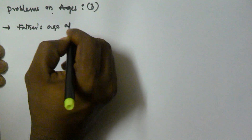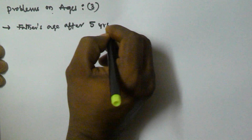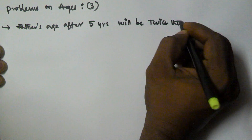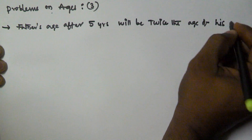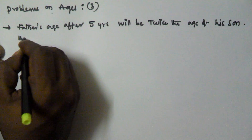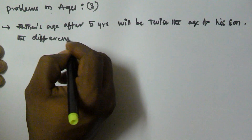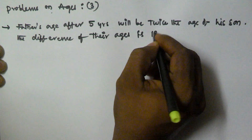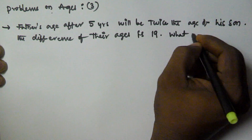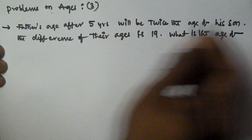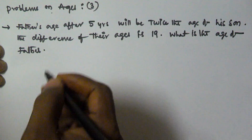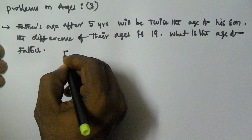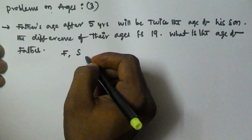Father's age after 5 years will be twice the age of his son. The difference of their ages is 19. So what is the age of the father? Let us assume the father's age is f and the son's age is s.